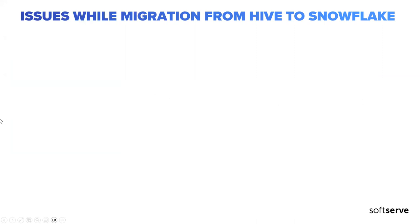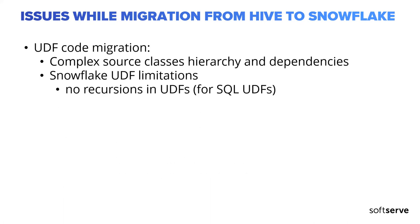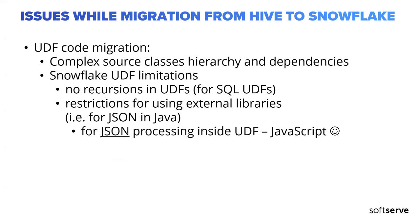A few other challenges: UDF code migration is complex due to source class hierarchies and dependencies. There are some Snowflake UDF limitations — for example, no recursion in SQL UDFs in Snowflake. There are also restrictions on using external libraries; for example, in Java you might use an external JSON library, but Snowflake doesn't allow it. That's why we process JSON in UDFs via JavaScript instead.